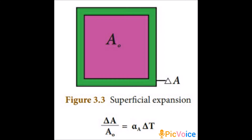The equation relates the change in area to the change in temperature. We write: delta A divided by A₀ equals the coefficient of superficial expansion into delta T. Here, A₀ is the original area and delta A is the change in area. Delta T is the change in temperature — the final temperature. So, the equation form is: change in area divided by original area equals coefficient of superficial expansion into change in temperature.